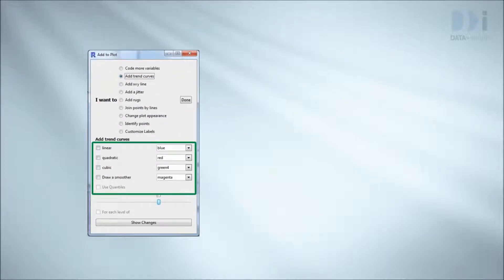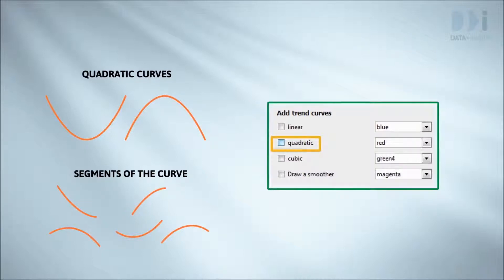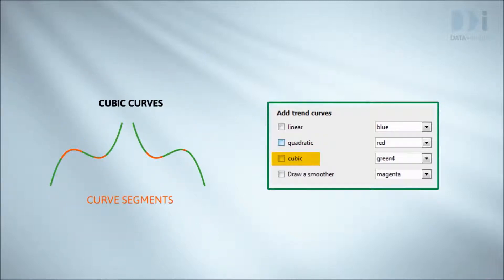Insight for example gives these choices. Linear is used to capture a trend that looks like a straight line. Quadratic curves can be used to capture trend curve shapes that look like any segment of one of the two curves on the left. Cubic curves are more flexible because they can take up to two bends. Any segment of these two curves may be chosen by the software.